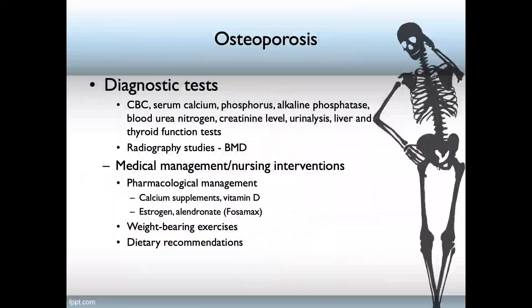Diagnostic tests to determine the presence of osteoporosis include CBC, serum calcium levels, serum phosphorus levels, alkaline phosphate, blood urea nitrogen, creatinine levels, urinalysis, liver, and thyroid function tests. The provider is looking for calcium deficiencies or the presence of bone or bone products in the bloodstream.